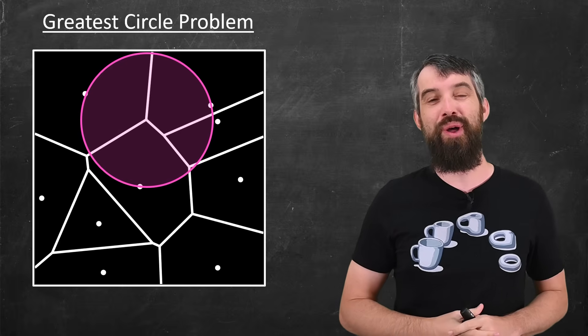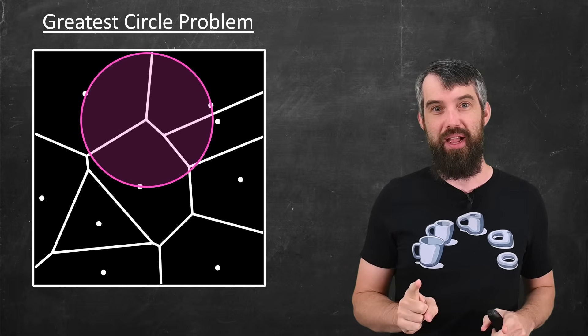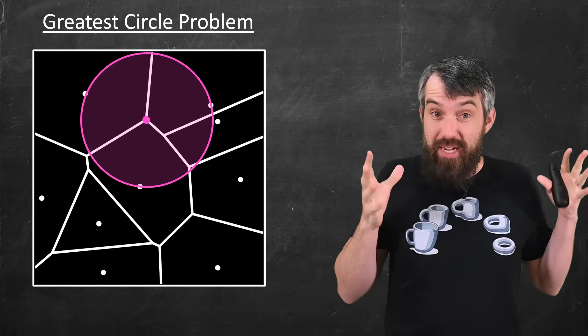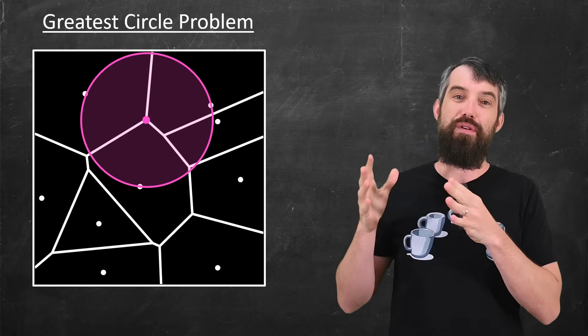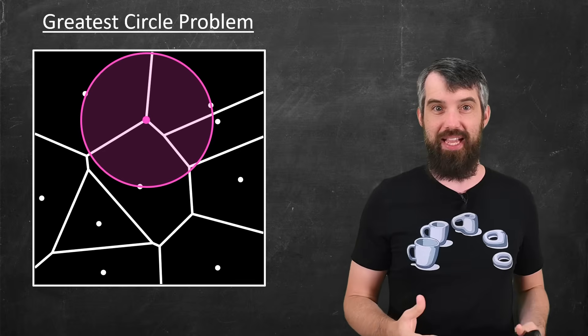Now let me put up the Voronoi diagram. And you'll notice what's happened here. The center point of that conjectured biggest circle aligns exactly with the vertex of a Voronoi diagram. And in fact, this is always the case.